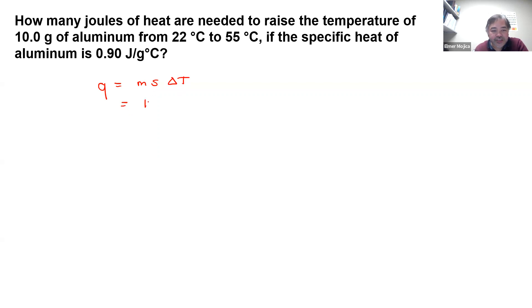The mass is given as 10 grams. Now, the specific heat changes depending on the given substance. For instance, here aluminum is the one that's given, so that's 0.90 joules per gram degree Celsius.